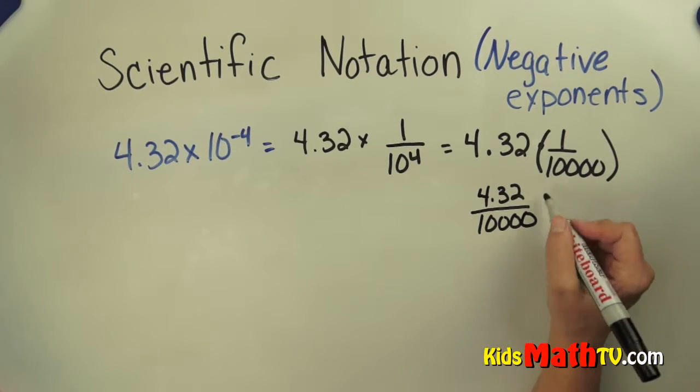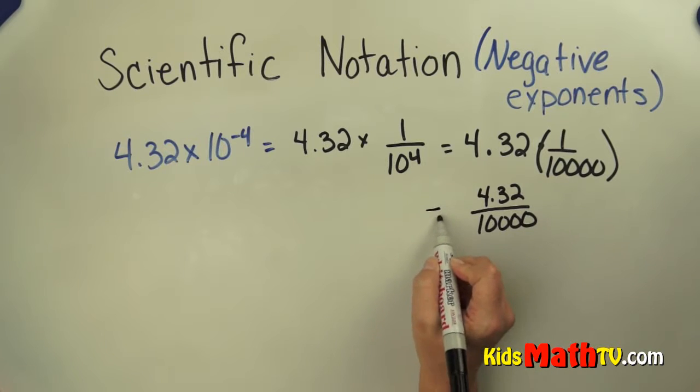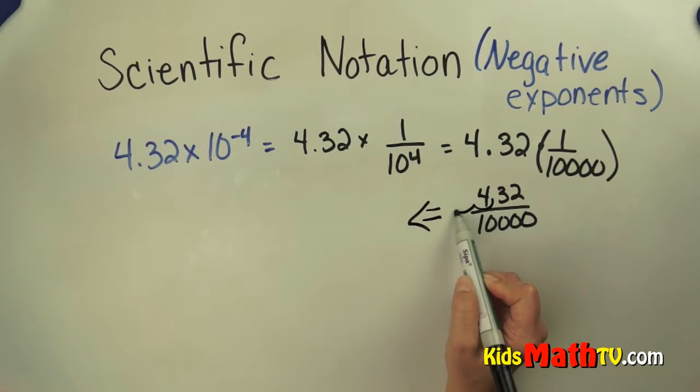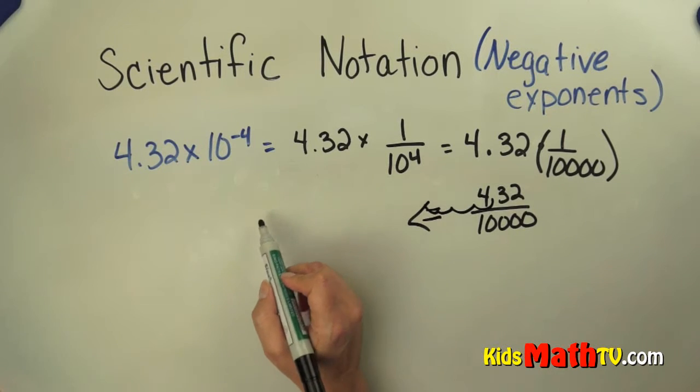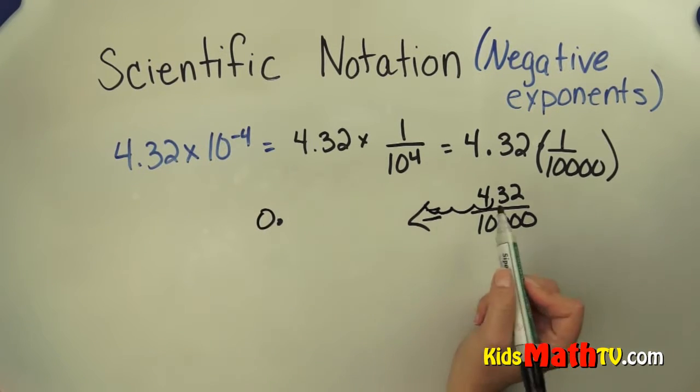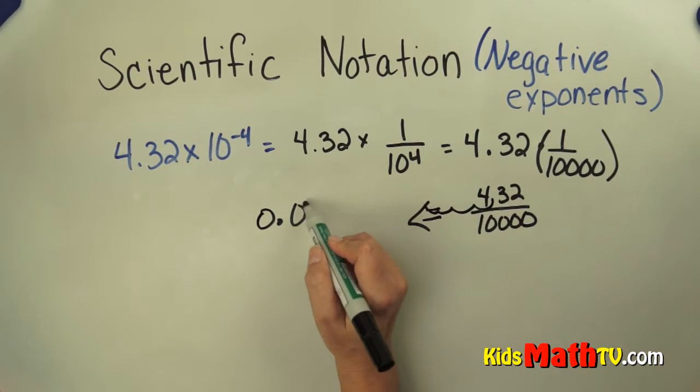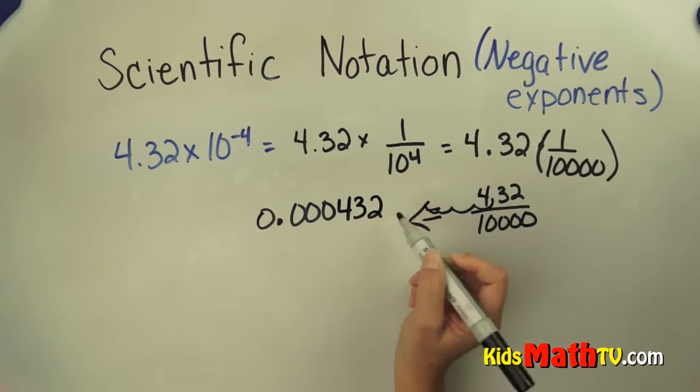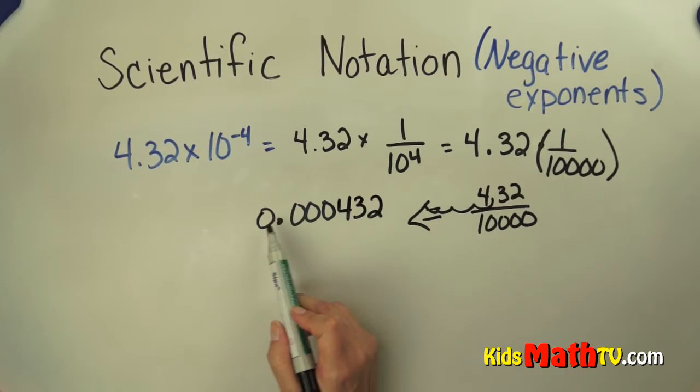And this becomes, I'm going to write it this way, 4.32. I'm going to move it to the left 1, 2, 3, 4 times. And I have 0.0001, 2, 3, 0's, 4, 3, 2.